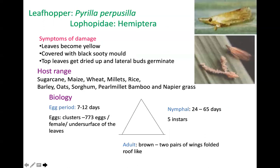In the sucking pest complex of sugarcane, the first is the leafhopper — Pyrilla perpusilla — belonging to the family Lophopidae of the order Homoptera. An important thing to understand is how to identify the insect. The nymph has a posterior string covered with cottony scales, while the adult has a roof-like structure where the forewings fold in a roof-like manner, and the rostrum is projected outward in a snouted manner.